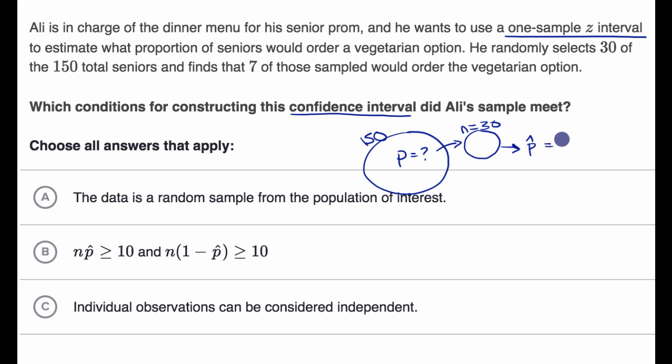It looks like seven out of the 30 want the vegetarian option. And he's going to determine some confidence level and then construct a confidence interval. But remember the conditions that we've talked about in previous videos.